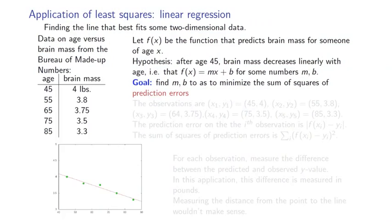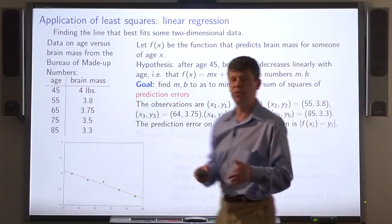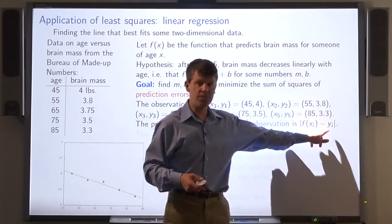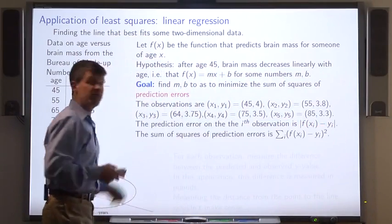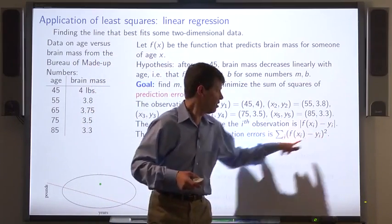So here's a line. These are the points. We're trying to find the line that best fits these points. The prediction error on a particular observation is the absolute value of the difference between the prediction and the actual value. And the sum of squares of prediction errors is just the sum of squares of those differences.